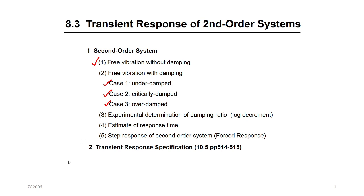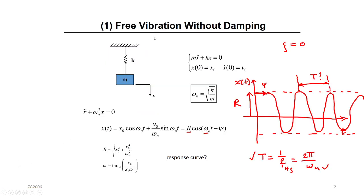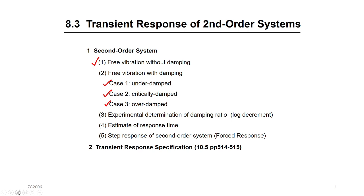Now, the topic of today: what if we do not know the model? You are in the field or in the lab and you have a second order system, but you don't know the model — you don't know the transfer function. Like a pump or a compressor in the field, and you want to design a controller to control the vibrations, for example. So how are you going to design the controller if you don't know the model, the equation of motion or the transfer function? You can determine that experimentally. This is what we're going to talk about today: experimental determination of zeta.